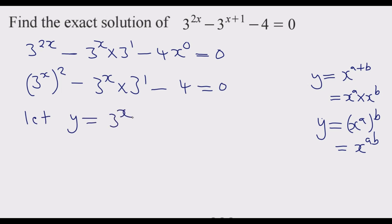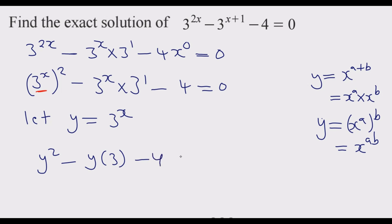At this point I'll say let y equal 3 to the power x. So whenever there is 3 to the power x, I'll put y. The function becomes y squared — because we've replaced with y — then minus y multiplied by 3, then minus 4 equals 0, which gives us y squared minus 3y minus 4 equals 0.